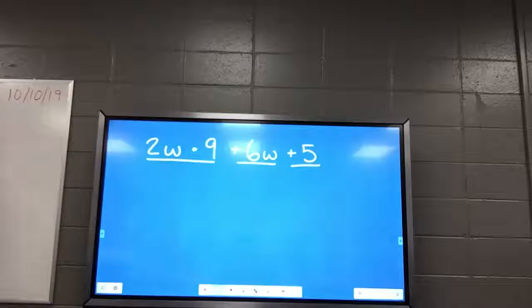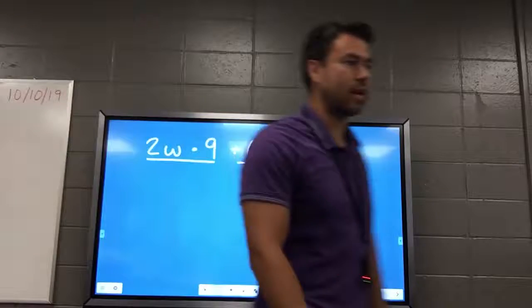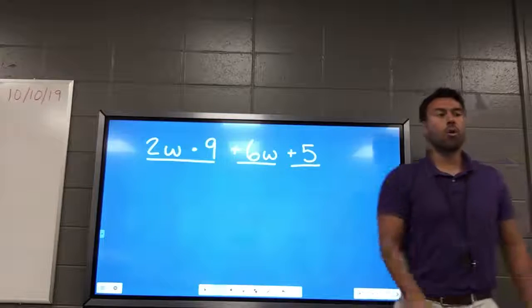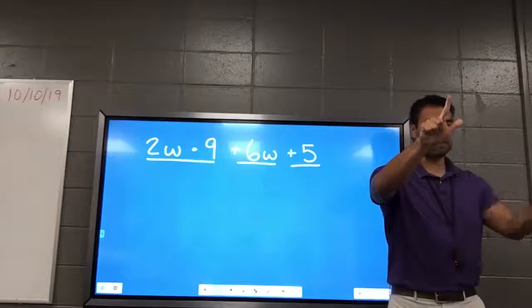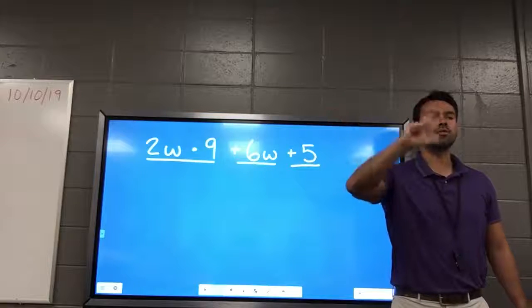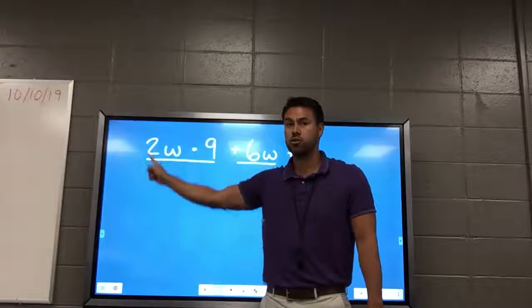All right, the definition of terms, guys, listen to me carefully. You should have it in your notes already. A term is a number by itself, like five, or a variable by itself, like V or W by itself, or a product of numbers and variables. And this right here is a product of numbers and variables. That's only one term.